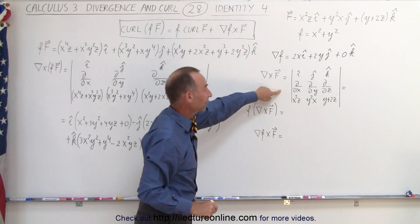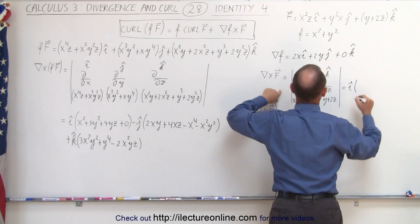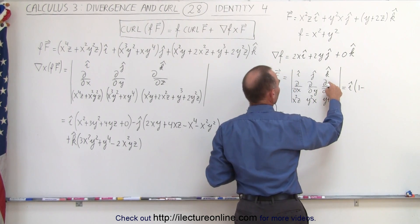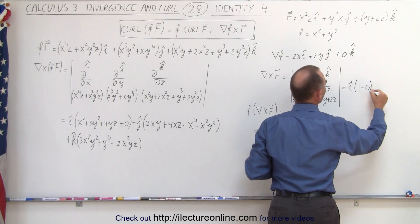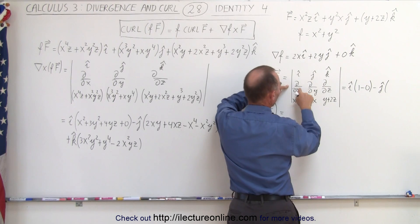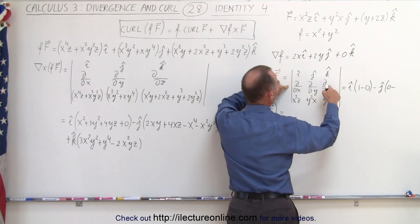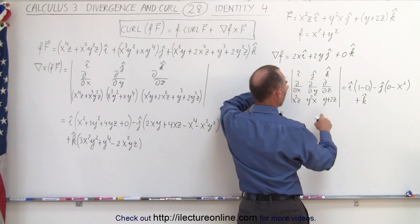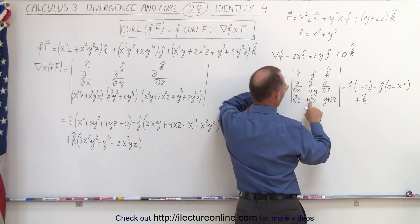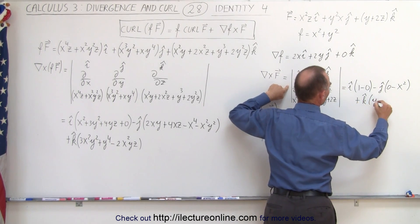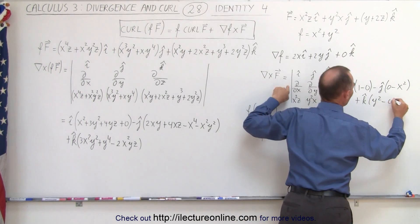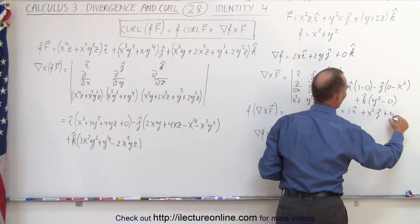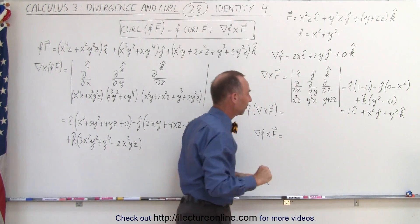Now we take the curl of F. This equals I times the partial with respect to Y of this quantity, which is simply 1, minus the partial with respect to Z, which is 0. For the J component: minus the partial with respect to Z of this, which is X squared. For the K component: the partial with respect to X of this, which is Y squared, minus the partial with respect to Y, which is 0. So the curl of F equals 1 in the I direction, plus X squared in the J direction, plus Y squared in the K direction.